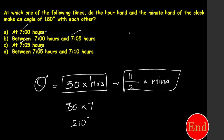At 7 o'clock the angle is 210 degrees, but I need 180 degrees. So I need to subtract the minutes contribution. Since 7 o'clock gives 210, which is not the right answer, I need to check either 7:05 or 7:10.